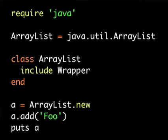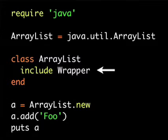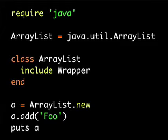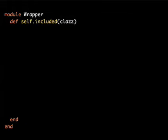In the code sample, the ArrayList class is opened up so that I can include a module that I have written. Ruby modules are simply collections of methods that can be added to any class, and in this example, a module called Wrapper is being included in the ArrayList class. The effect of this is that all future instances of the ArrayList class will include any methods inserted into it by this module. Looking at the Wrapper module shows that it declares a class-scoped method called Included. This method is useful for metaprogramming because it is a callback method invoked by the Ruby interpreter whenever the Wrapper module is included in any class.